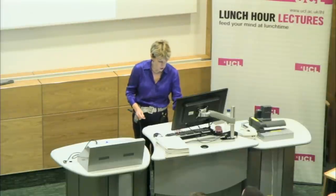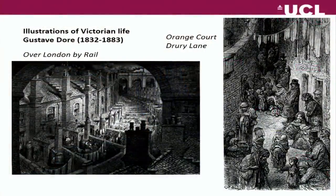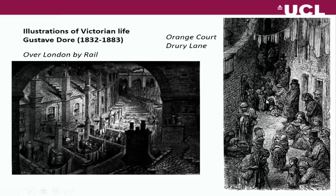These illustrations from the time show the kind of squalid housing that the new factory workers lived in, and the appalling conditions of overcrowding that led to frequent disease outbreaks of cholera and so on. Eventually that led to steps to improve health, and that was really the start of public health as we know it. I think the industrial revolution wouldn't have got very far without some improvements in those conditions.